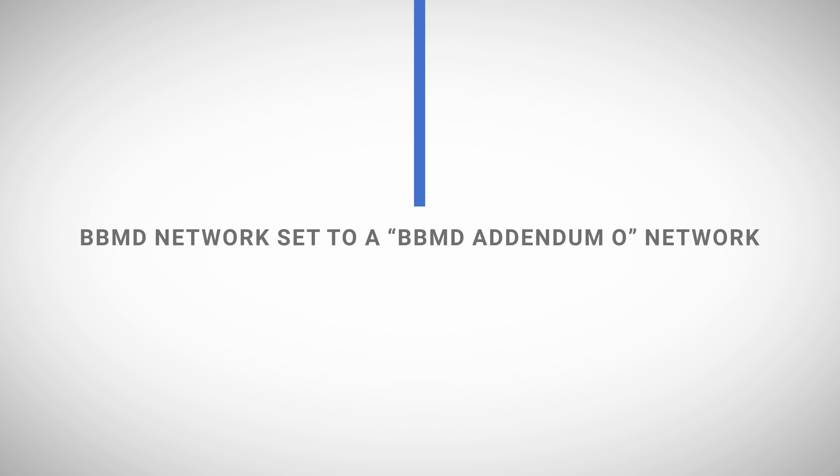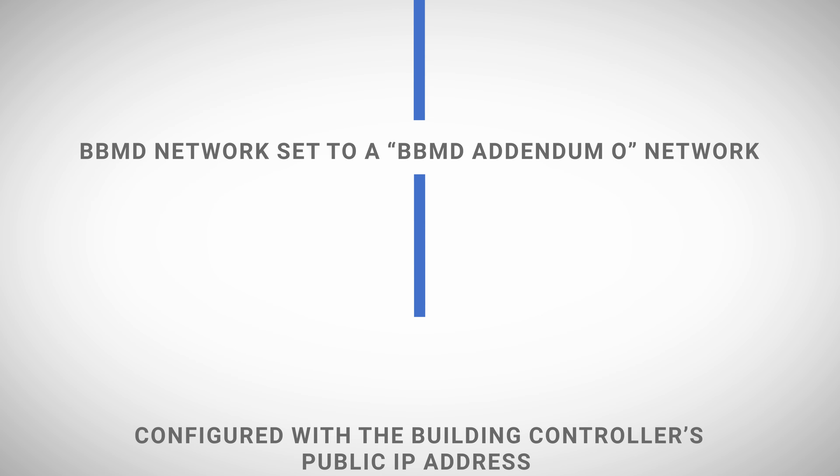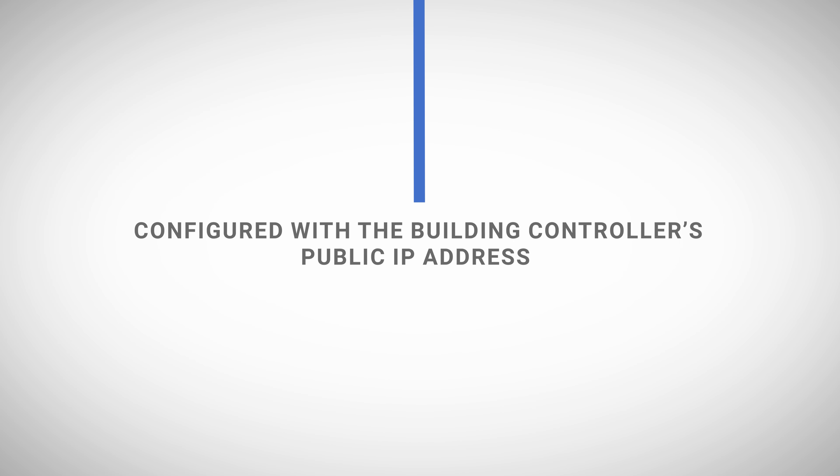But with ASHRAE BACnet standard addendum O, you can create a BACnet system through the internet even when port forwarding is being used. To do so, each building controller that is configured as a BBMD will need to have its BBMD network set to a BBMD addendum O network, and then the BBMD addendum O network configured with the controller's public IP address. The public IP address is the public address of the IP gateway through which the BBMD connects to the internet.